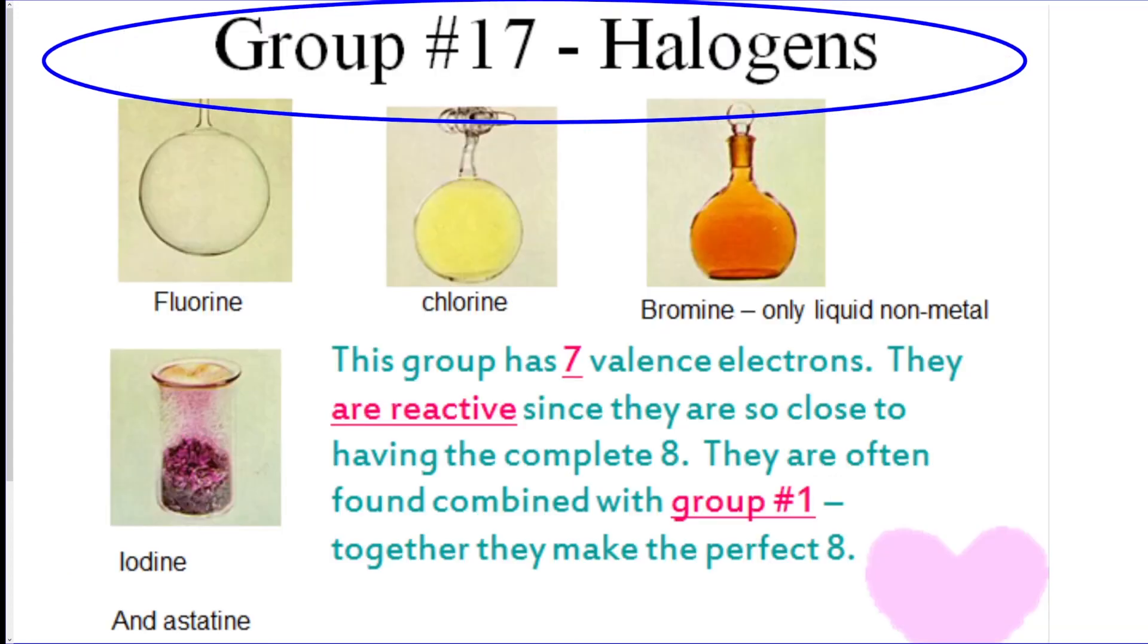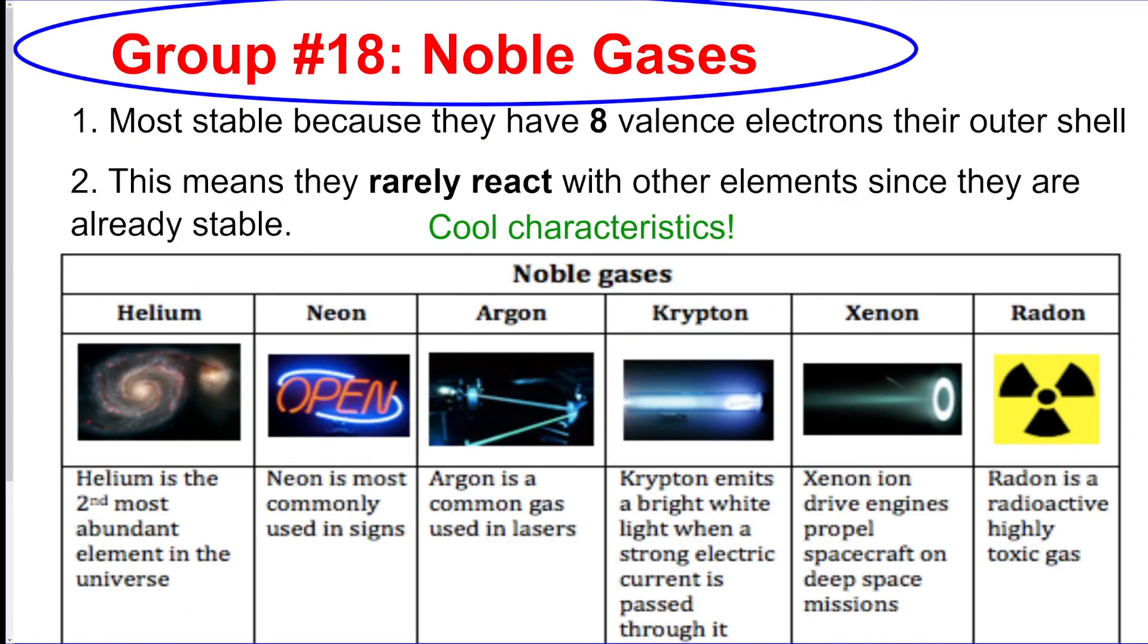I just want to point out group 17 is also called the halogens, and they're the group that reacts really well with group one. And last but not least, we have our noble gases. They are the ones in group 18, and they have a full outer shell, which means they rarely react.